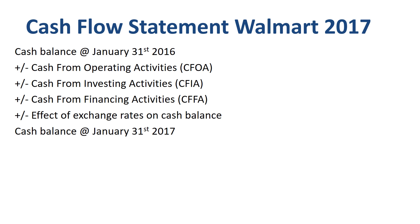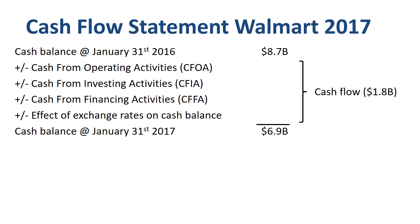Reviewing Walmart's cash flow statement for 2017: Walmart started the year with $8.7 billion in cash and cash equivalents, and ended the year with $6.9 billion — a net cash outflow of $1.8 billion. Cash from operating activities was an inflow of $31.5 billion. Cash from investing activities was an outflow of $14 billion. Cash from financing activities was an outflow of $18.9 billion. Recalculating non-US dollar cash balances at current exchange rates had a negative effect of $400 million.